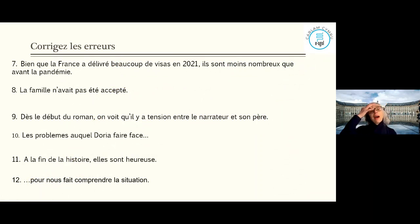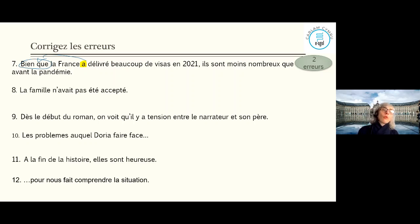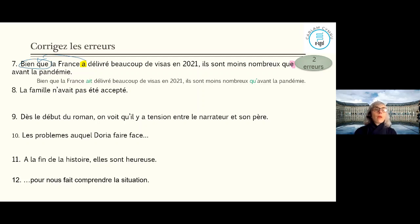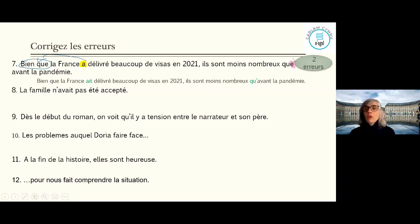Sentence 7: 'Bien que la France a délivré beaucoup de visas en 2021, ils sont moins nombreux qu'avant la pandémie.' Two errors. First: after 'bien que' you need the subjunctive — so 'a' should become 'ait': 'bien que la France ait délivré'. Second: 'qu'avant' — 'que' before a vowel needs an apostrophe: 'qu'avant la pandémie'.